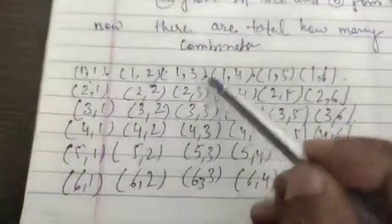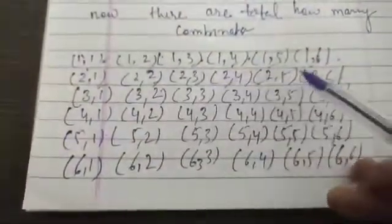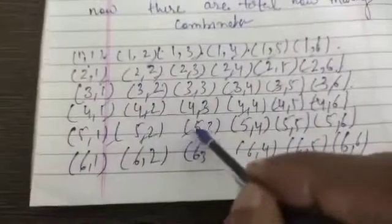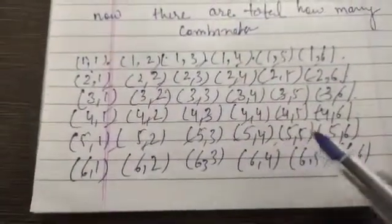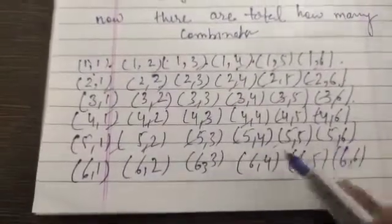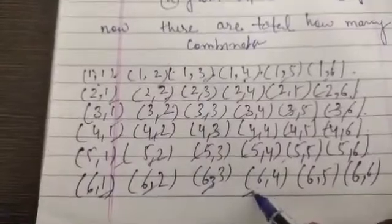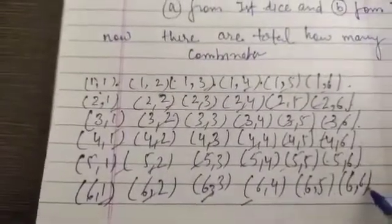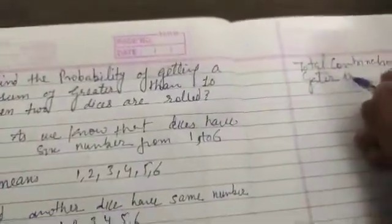So, total combinations: 36. Now, we need to find combinations with a sum greater than 10. Those are: five and six (sum 11), six and five (sum 11), six and six (sum 12). So there are 3 combinations with a sum greater than 10.